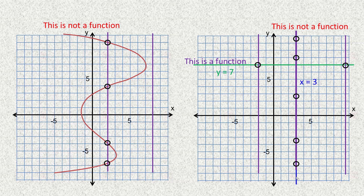So that's how you use the vertical line test. You're looking for places to try to draw the line that will cross your graph in more than one place, and as soon as you hit more than one place, it's not a function. If you can't draw it anywhere that it crosses in more than one place, then it is a function. That essentially is the vertical line test, and that's the end of the tutorial.